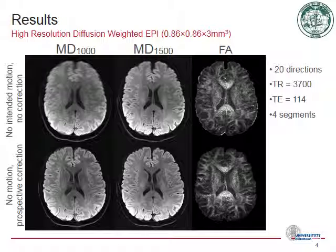The upper row of the figure displays images of an uncorrected scan without intended motion. Therefore, we combined MUSE with prospective motion correction. This substantially improved image quality in high resolution DWI in the presence of subject motion. The results of the motion correction measurement are shown in the lower row.